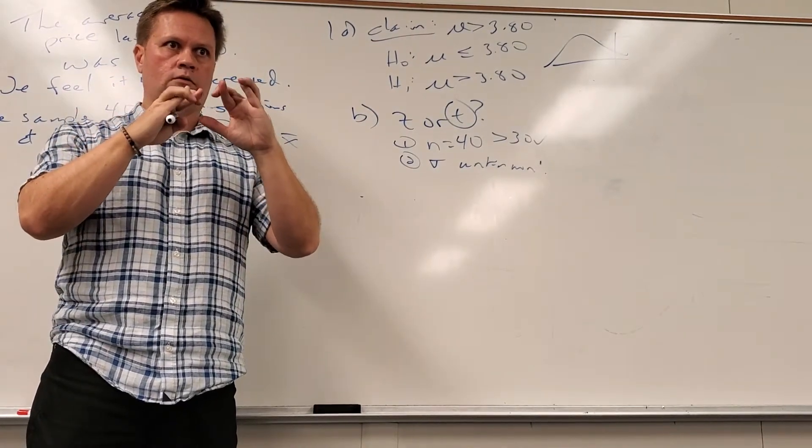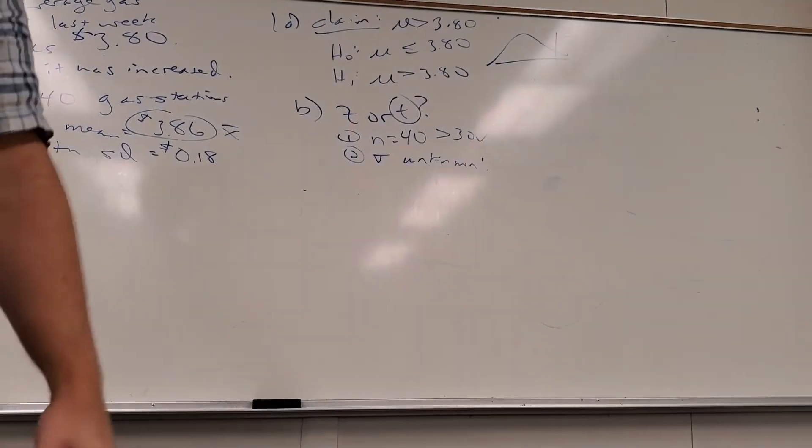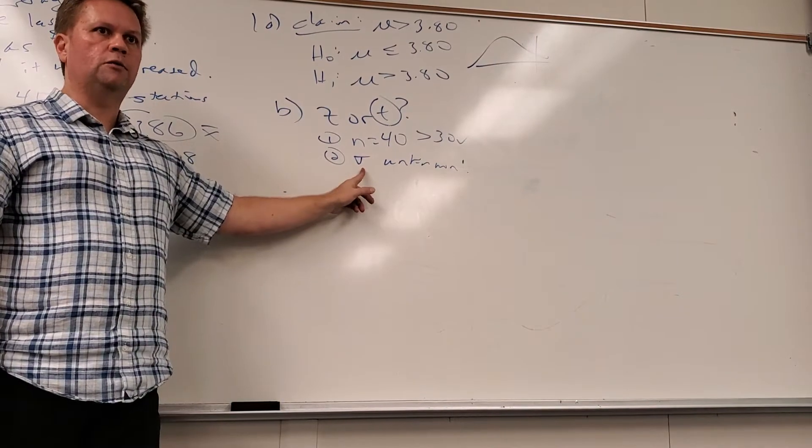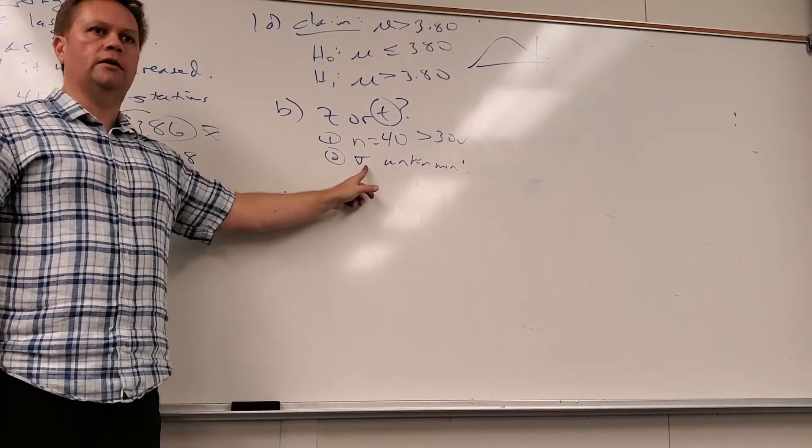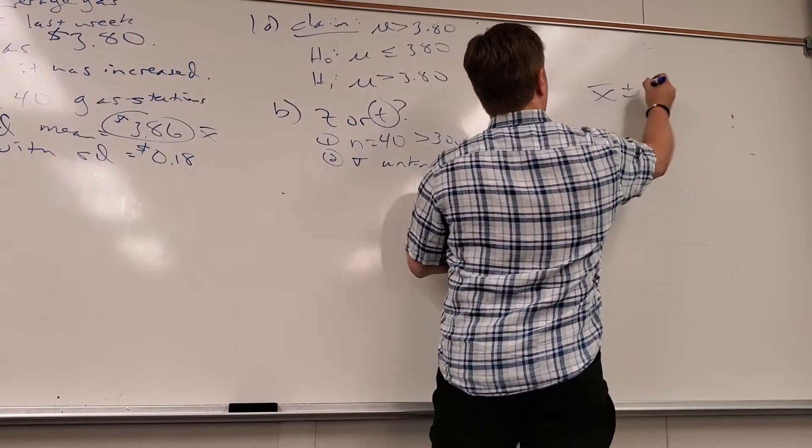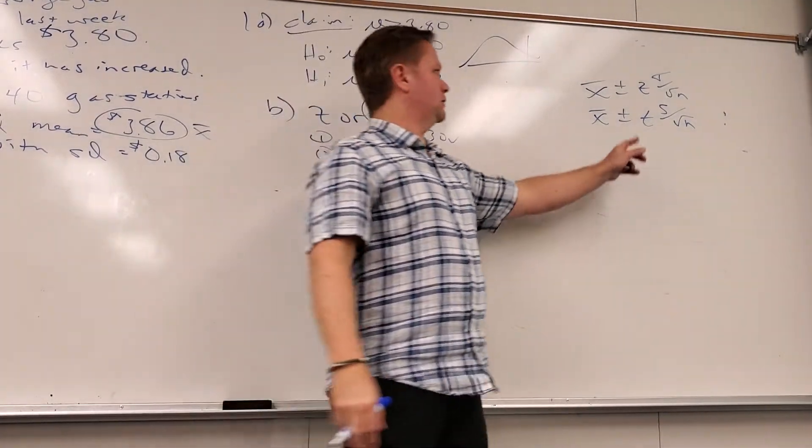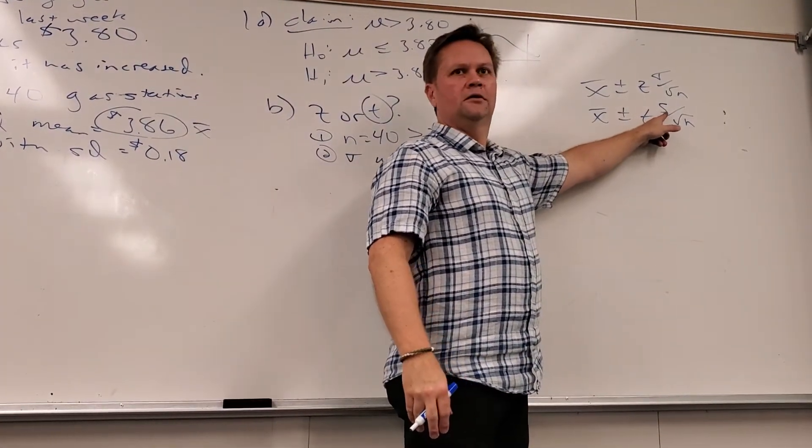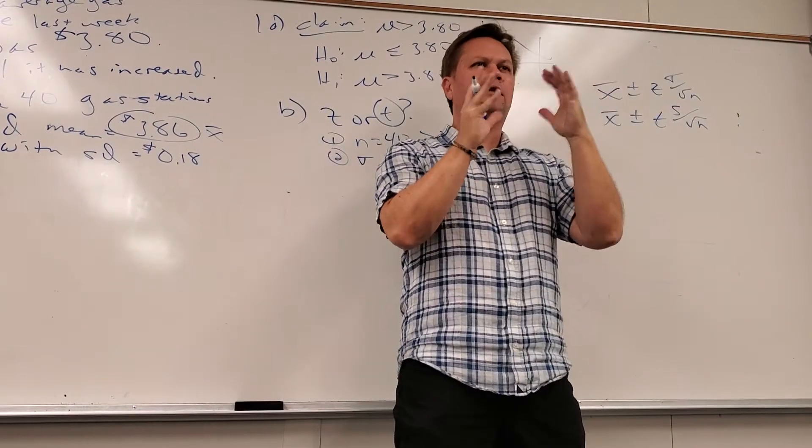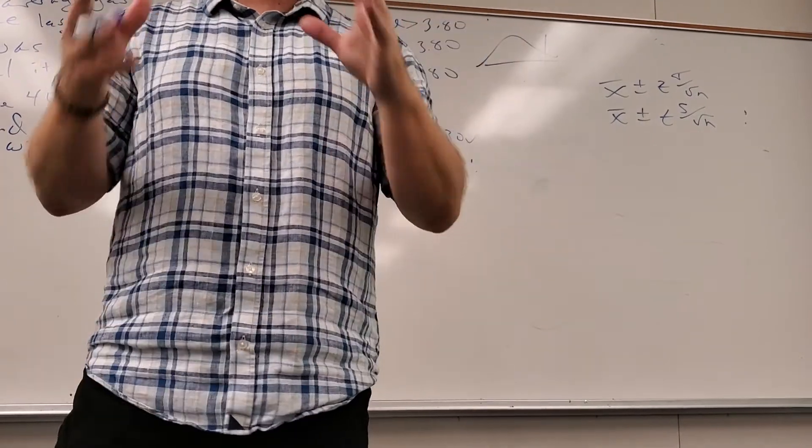So in order to use the z-score, you have to fulfill both one and two, right? Yeah, to do anything you need one - it's got to be normal somehow. In this case the sample size saved us. And then which one do I use is which standard deviation do I know? I don't know sigma, so I can't use a z-score. If I knew the population standard deviation, I could use a z-score.